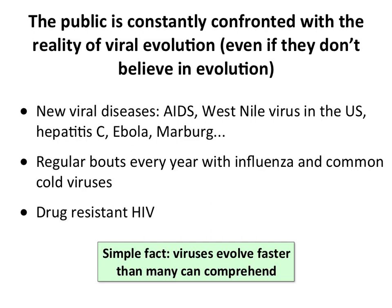The emergence of new viral diseases we've talked about — AIDS, West Nile virus, hepatitis C, Marburg and Ebola — every time a new virus emerges it's evolution at work. Flu every year is evolution; the fact that we need a new flu vaccine every year is a consequence of virus evolution. Drug-resistant HIV is again selection of resistant mutants. Viruses evolve faster than any other thing on the planet, and many people don't understand this.